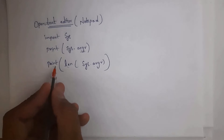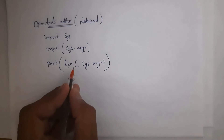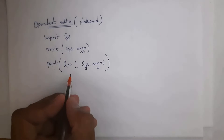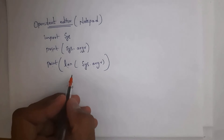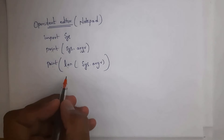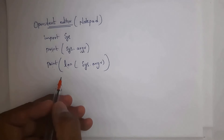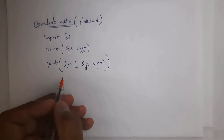Next, I've written 'print len(sys.argv)', where the length function is used to identify the length. For example, if I give 4 inputs like 1, 2, 3, 4, then you will get output length 5, because even the file name is considered as one input. So you will get output length 5.